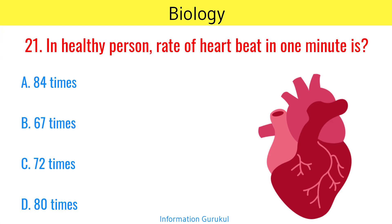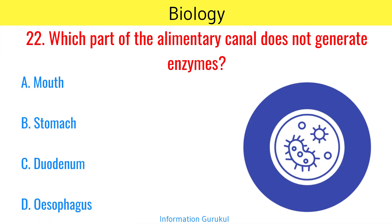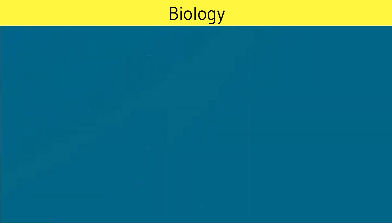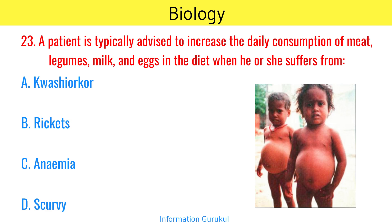In a healthy person, the rate of heartbeat in 1 minute is 72 times. Which part of the alimentary canal does not generate enzymes? Oesophagus. A patient is typically advised to increase the daily consumption of meat, legumes, milk, and eggs in the diet when he or she suffers from Kwashiorkor.